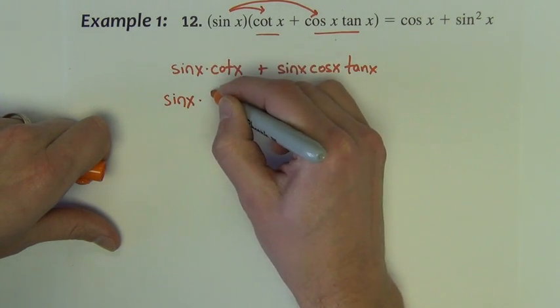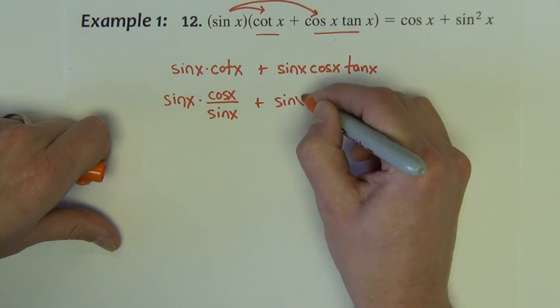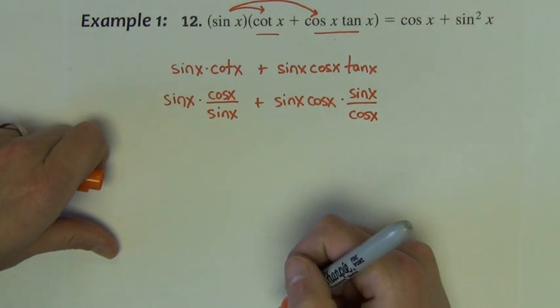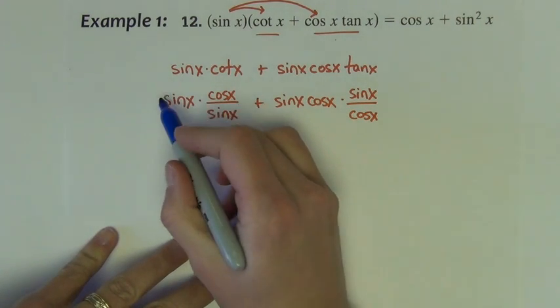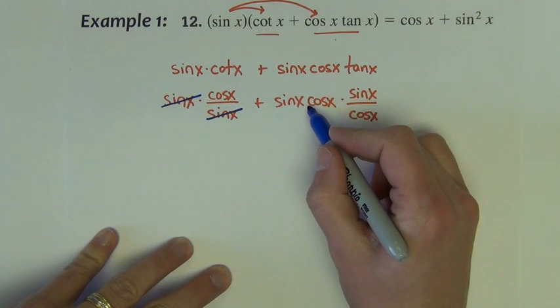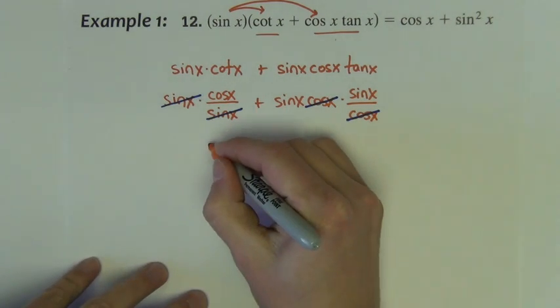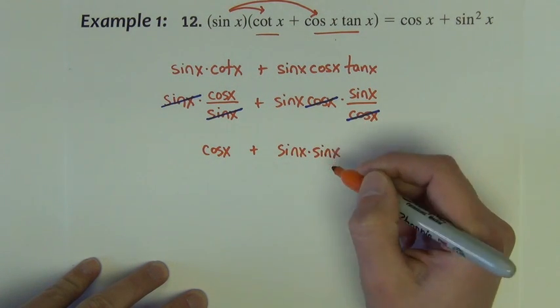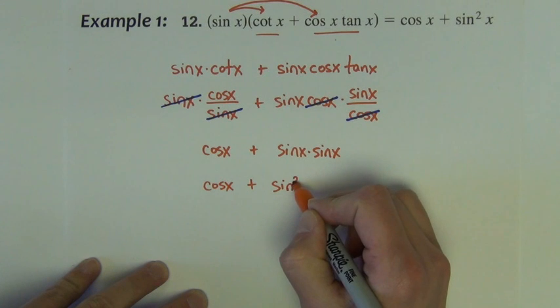So sine x times cotangent becomes cosine x divided by sine x. Now I'm here replacing the cotangent and the tangent respectively. I've got a factor of sine x divided by a factor of sine x and they can reduce out of the problem. I have a factor of cosine x divided by cosine x and they can cancel out. So I'm left with now, in this first term, cosine x plus, and here I've got sine x times sine x. We can multiply these two sines together, sine x times sine x is sine squared x.